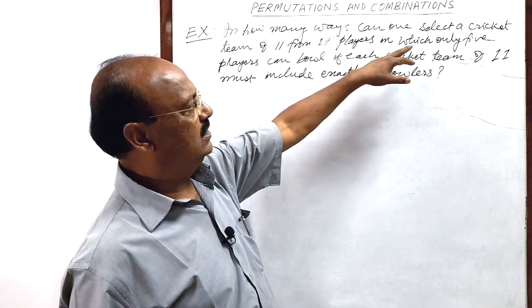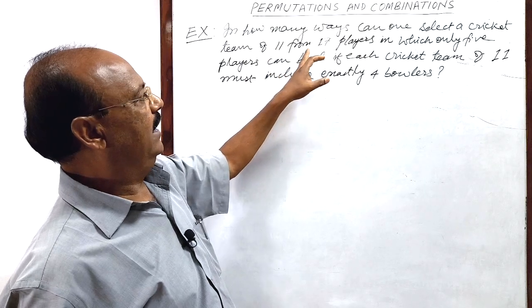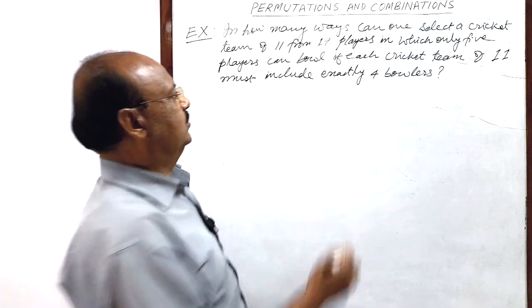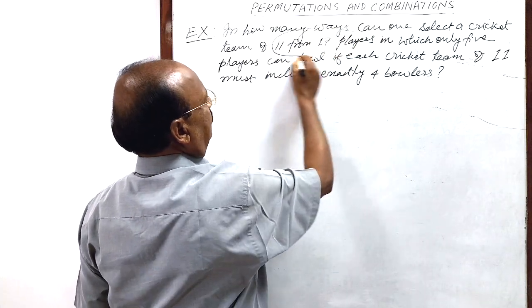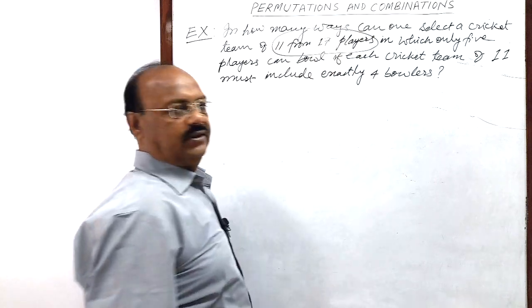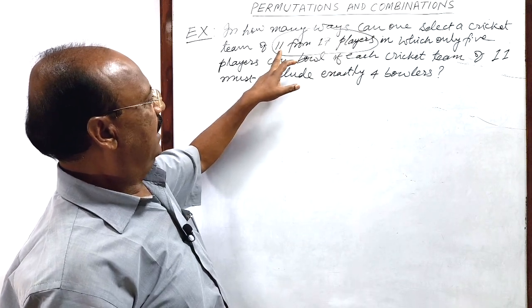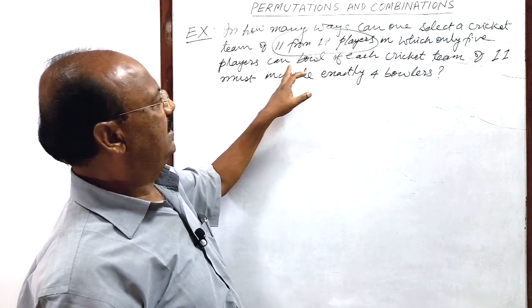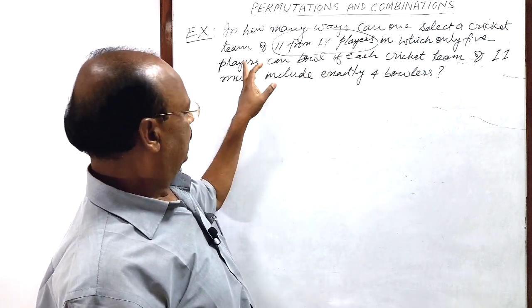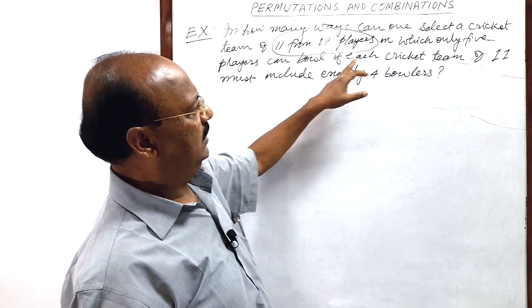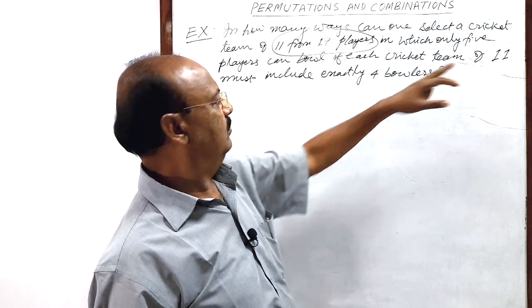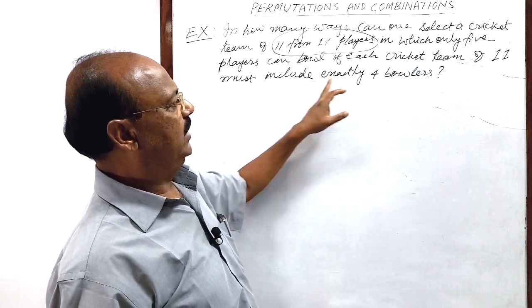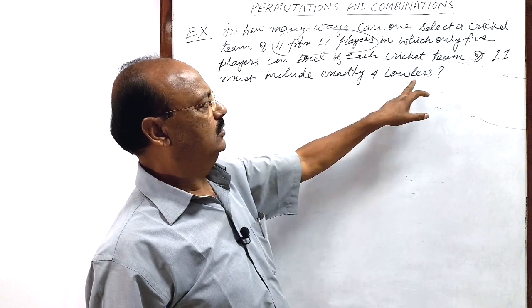in how many ways can one select a cricket team of 11 from 17 players? So we have to take care of this requirement. We have to select 11 players from 17 players in which only 5 players can bowl if each cricket team of 11 must include exactly 4 bowlers.